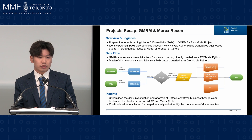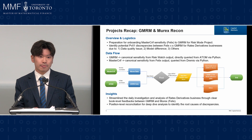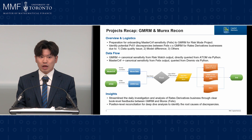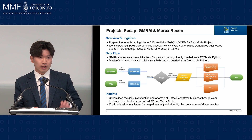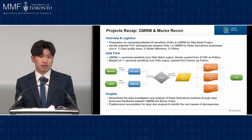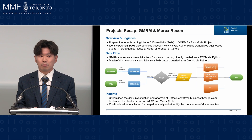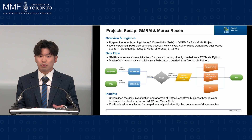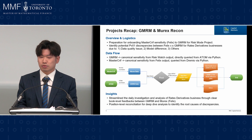From the data flow, we require two types of data: Murex data and GMRM data. We can grab the Murex data from the FELIX output query via Python, while the GMRM data can be retrieved directly from ADAM via Python. After grabbing those two types of data, we form a pivot table by book level to see if there's a large difference between GMRM and Murex. If we find a large difference, we can deep dive into a position-level check to find the root cause of those discrepancies.